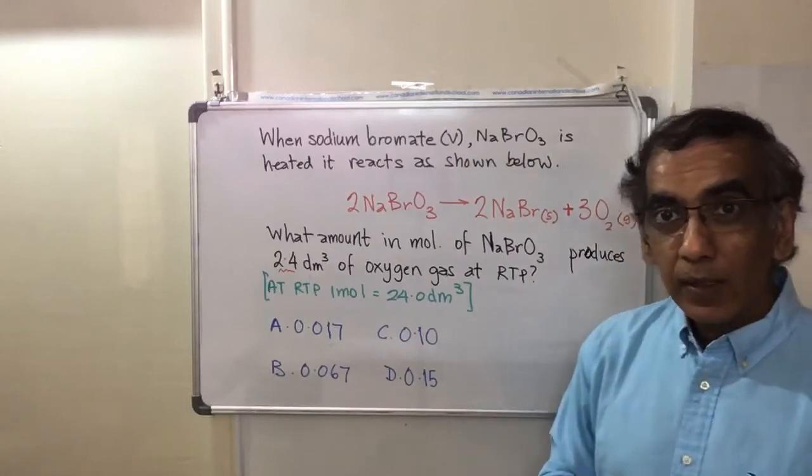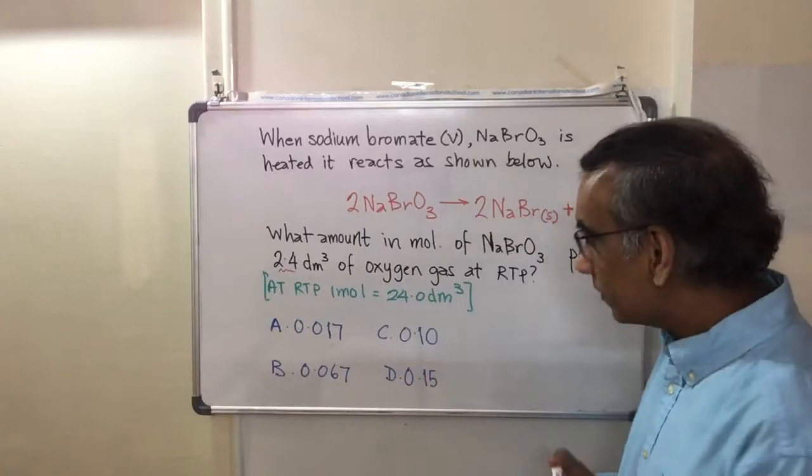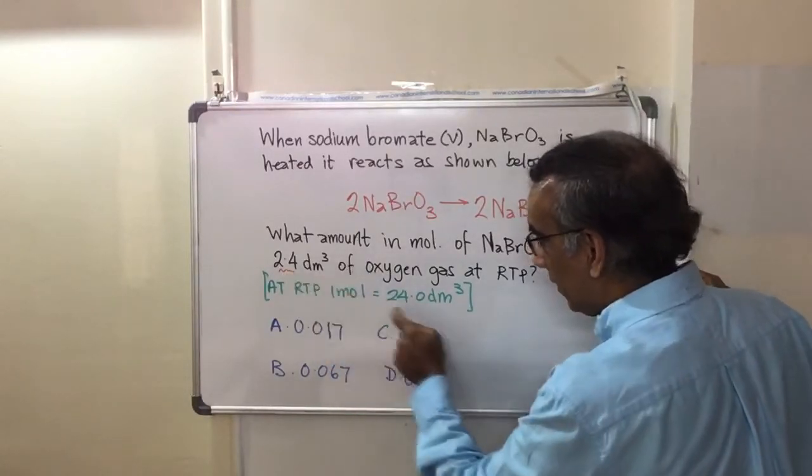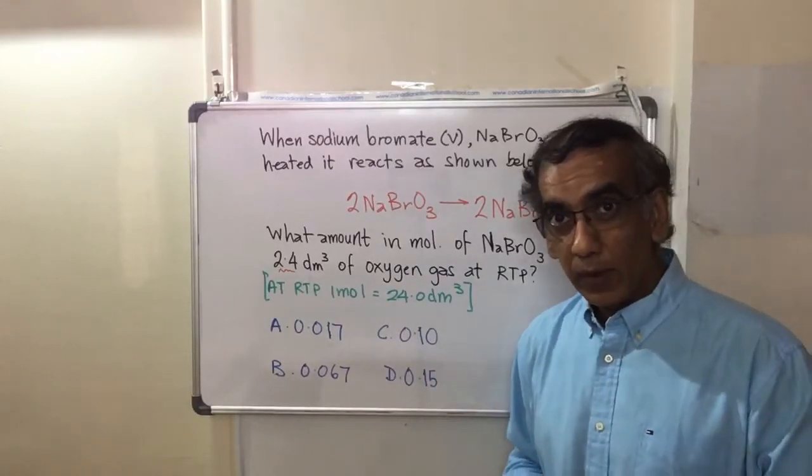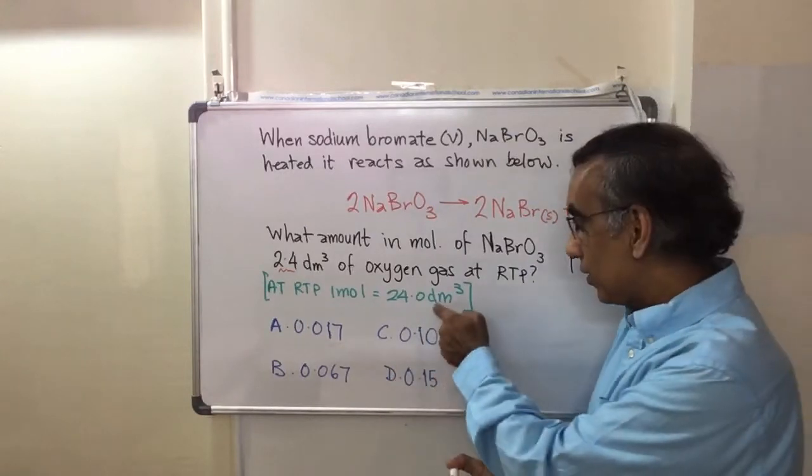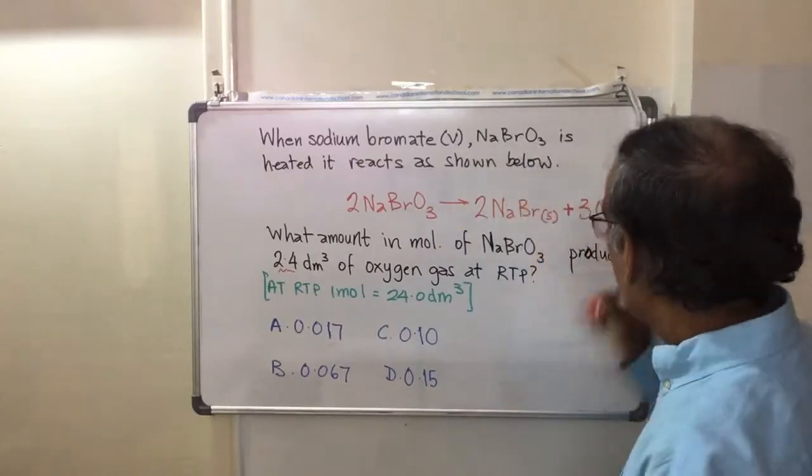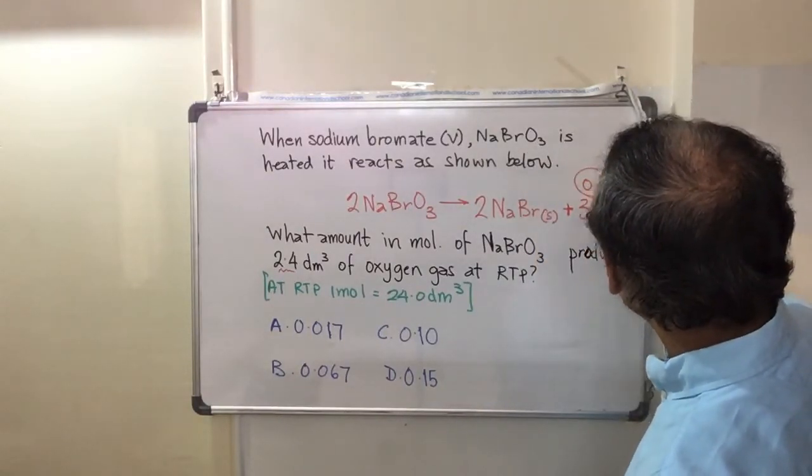what you need to immediately realize within a few seconds, because you only have 90 seconds to solve this question, is that 2.4 is one-tenth of 24. And if it's one-tenth of 24, and that one mole of any gas at room temperature and pressure is 24, then 2.4 would be a tenth of a mole. So that's 0.1 moles here.